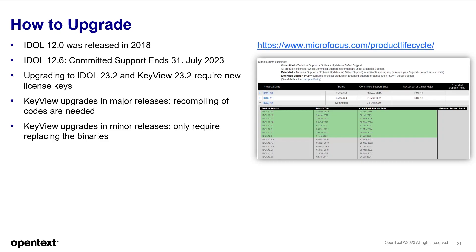How to upgrade: EIDL 12 has been out since 2018 and all current customers should really be at some level of version 12. If you're not on version 12, you would have to first upgrade to version 12 and then to 23.2. Note that for 12.6, committed support ends in July this year. An upgrade to EIDL version 23.2 from 12.x requires a new license, as does the upgrade of KeyView from version 12 to 23.2 — please contact OpenText to request your new license key. If you're updating your KeyView from the 2012 version, you'll have to recompile the code. Python scripts are included to help with this transition.